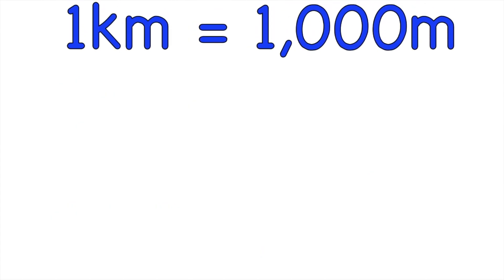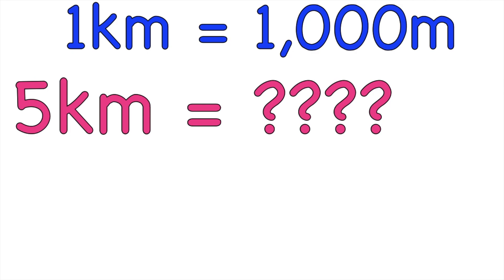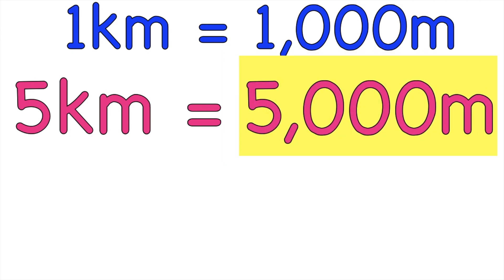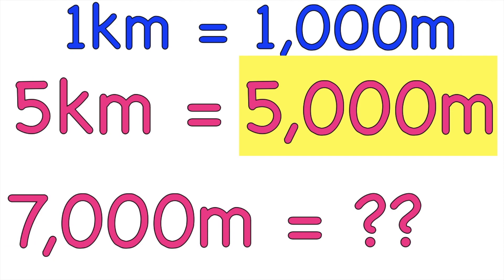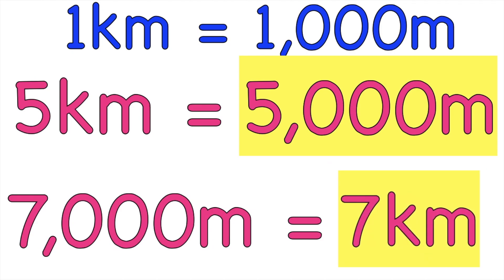Always remember, in every one kilometer, you have 1,000 meters. So what if we have five kilometers? How many meters do we have? Good job — we have 5,000 meters. How about this one? If you have 7,000 meters, how many kilometers do you have? Good job — we have 7 kilometers.